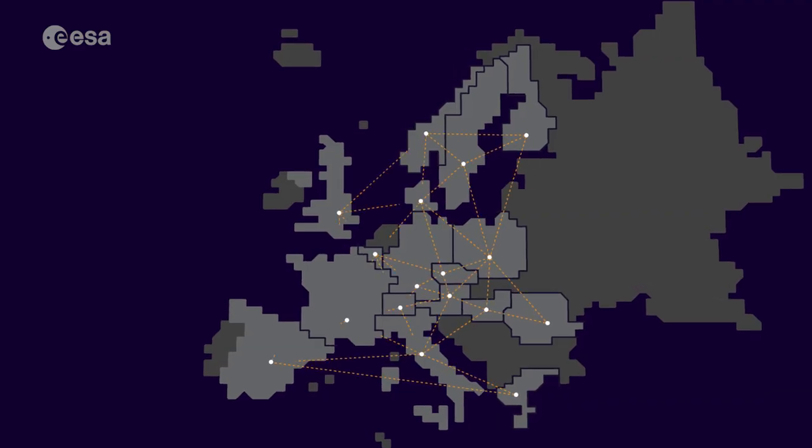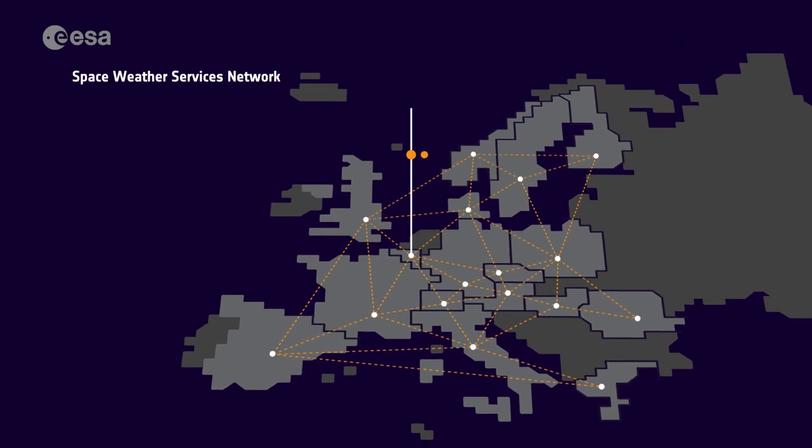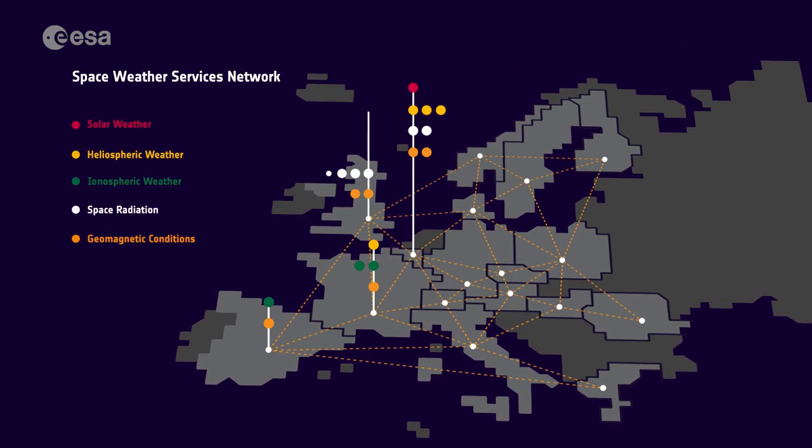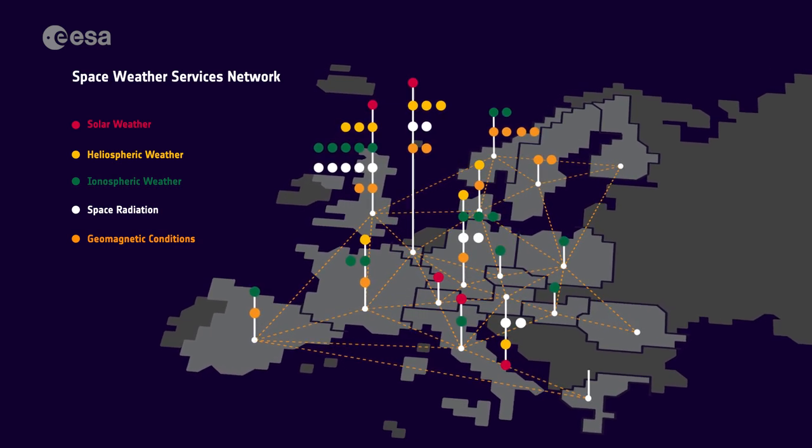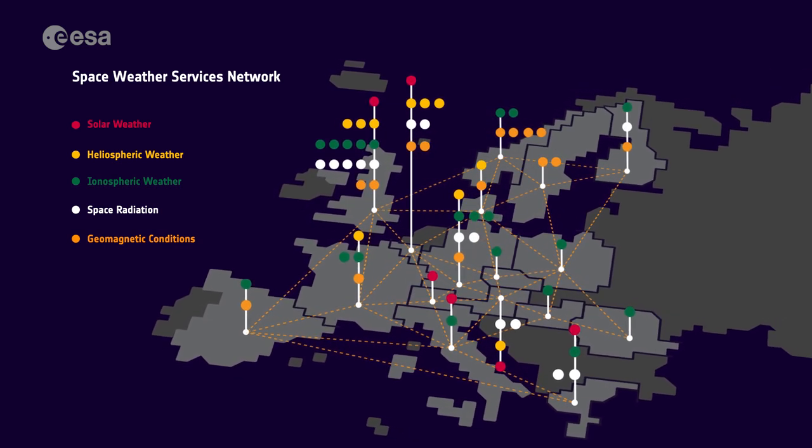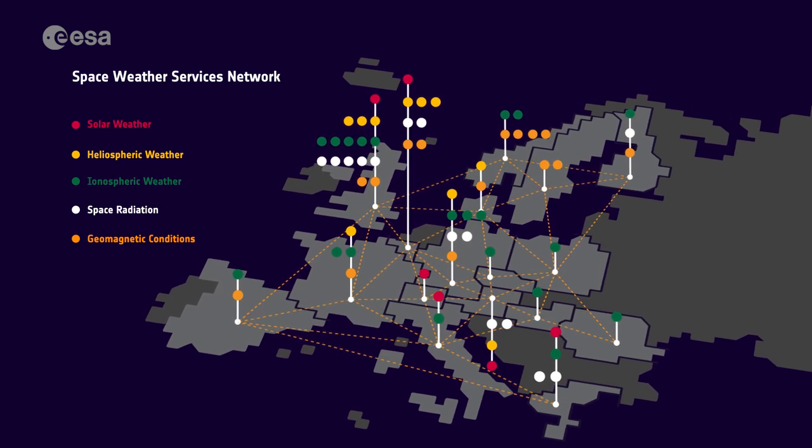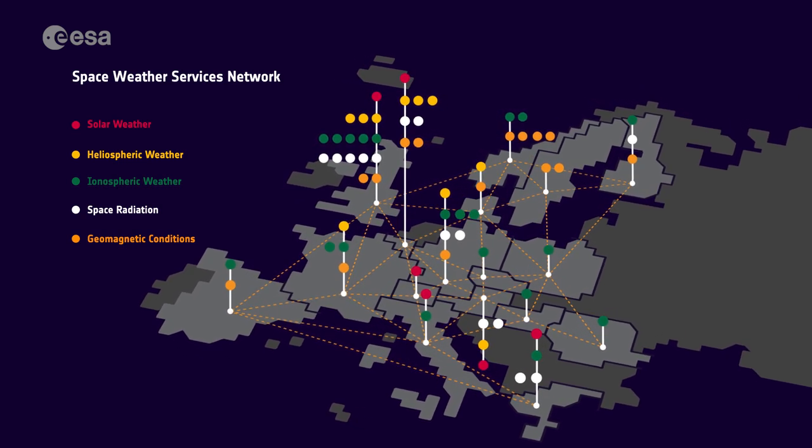The European Space Agency, ESA, is building a network that brings together European space weather expertise so that data on solar activity can be collected, shared and used to issue forecasts and provide space weather warning services.